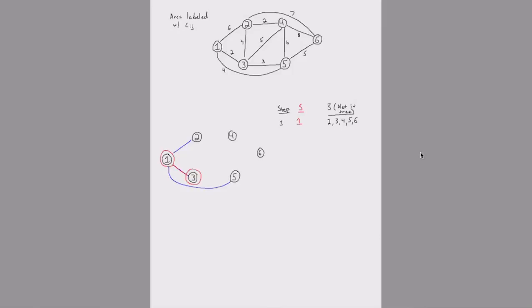After step 1, we have nodes 1 and 3 in our MST. At step 2, nodes 1 and 3 are in the tree, and nodes 2, 4, 5, and 6 are not. By including node 3 in the tree, we introduce new arcs crossing the cut: arc 3-2, arc 3-4, and arc 3-5. We now look at all the cut arcs to find the cheapest.